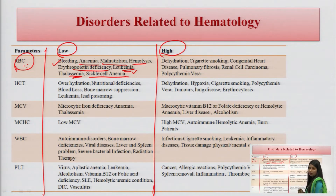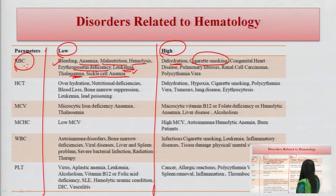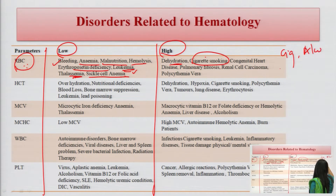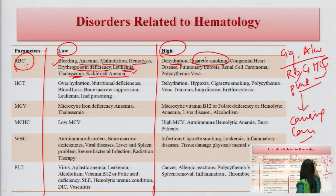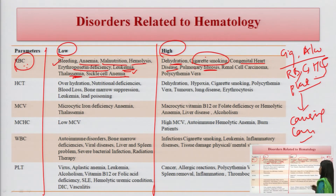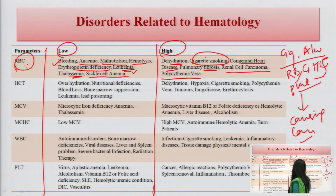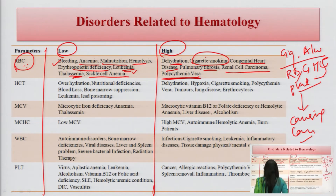For high RBC levels, the reasons include: dehydration, cigarette smoking, and alcohol use — which can raise RBC, hematocrit, and platelets, making them responsible for causing cancer. Other causes include congenital heart disease, pulmonary fibrosis, kidney cancer, and polycythemia vera — a cancer in which RBC levels are increased. These are all conditions associated with high RBC levels.